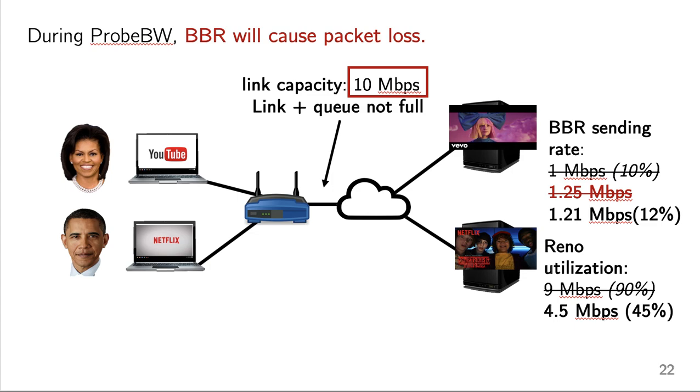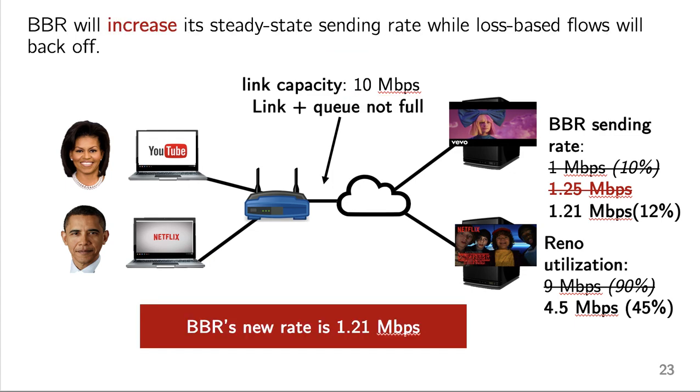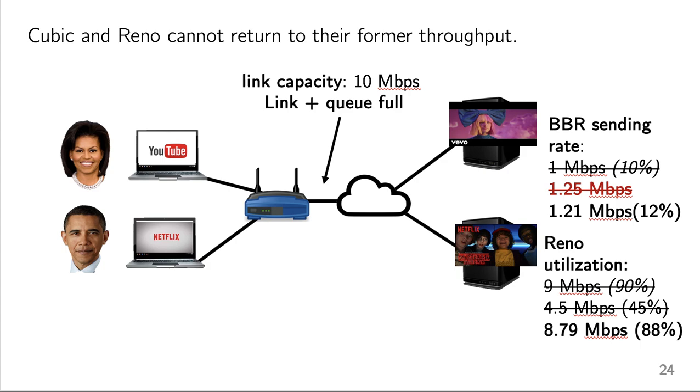And since Reno is a loss-based algorithm, it's going to cut its congestion window in half, reducing its utilization, let's say that makes it now using about 45% of the link. And despite some losses, BBR is going to see that it can get a higher throughput. Let's say it's about 1.21 megabits per second, so it's now using 12% of the link, which is more than it was using before. So while Reno has backed off, BBR's new sending rate is greater than what it was before. So even though now the link is underutilized, Reno can't possibly reclaim all of the bandwidth it had before, right? It can increase its window until it experiences loss, but the maximum utilization it can have now is about 88%. So as we can see, BBR's probe bandwidth phase is going to cause Reno and Cubic to back off.